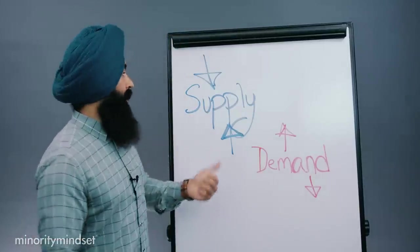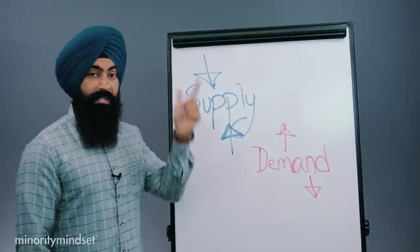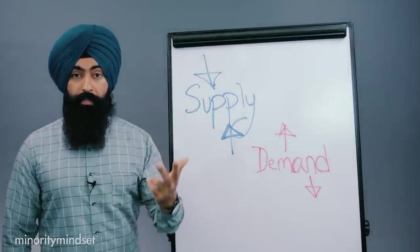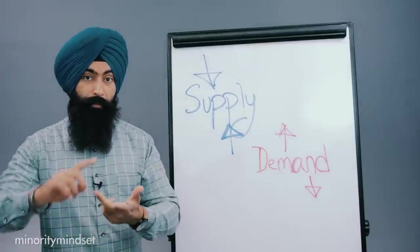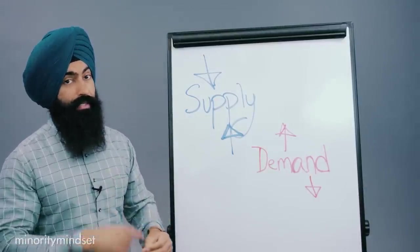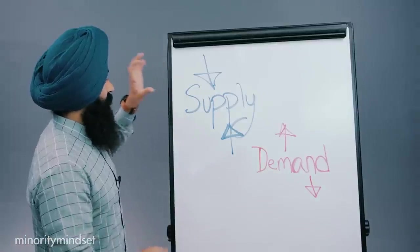Supply is going to be contributed by people wanting to sell their homes, or people being forced to sell their homes, aka foreclosures, or more homes being built. So either homes being created, people being forced to sell their homes, or people voluntarily selling their homes. So you want to pay attention to these three things and how this impacts supply.